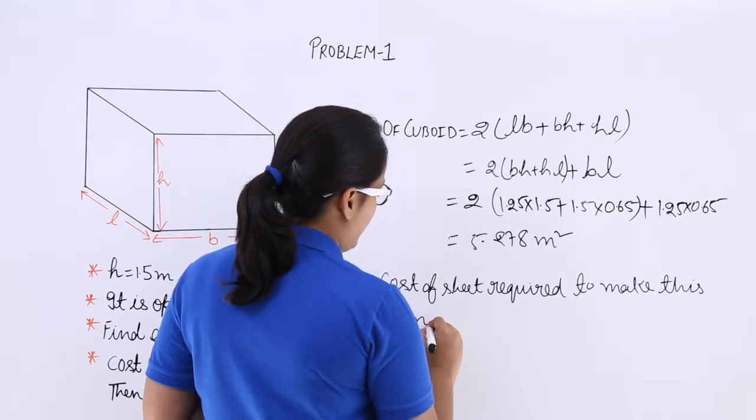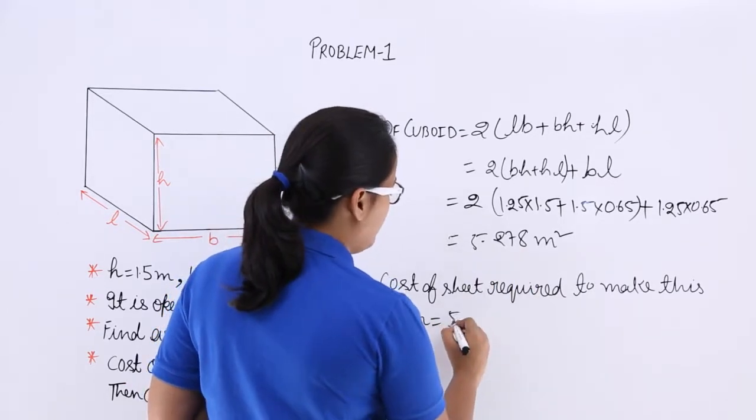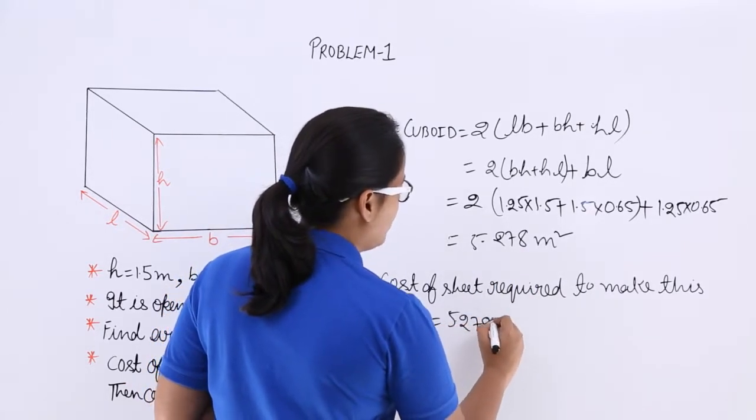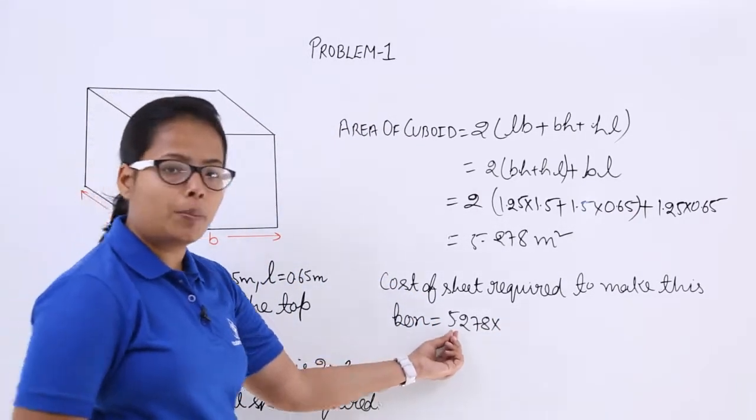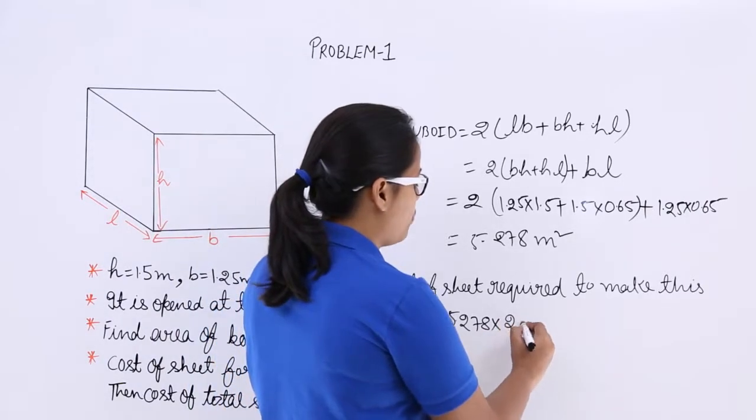Make this box is equal to, you can see here, area is 5.278. Cost for 1 meter square is 20. So, cost for this will be, let's multiply this expression with 20. You will get this much of rupees.